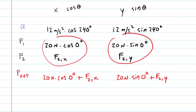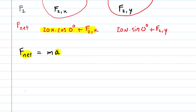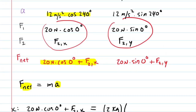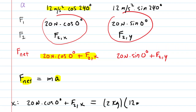Now we apply Newton's second law, which tells us that the net force in a particular direction equals the mass times the acceleration in that direction. For the x direction, we set 20 newtons times cosine of zero degrees plus the x component of F2 equal to the mass — 2 kilograms — times the acceleration in the x direction, which is 12 meters per second squared times the cosine of 240 degrees.